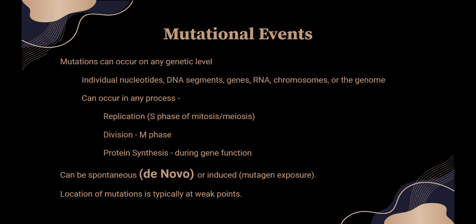These mutations can occur in any part of the copy-paste cycle of cell multiplication or in the protein synthesis phase. For example, it can happen during replication — when the nucleus gets the signal to start copying all of its DNA. If it doesn't copy all the information or copies something twice, a mutation can happen at that point. It can happen in the division phase of mitosis or meiosis where copied DNA separates into daughter cells. It can also happen during protein synthesis when something in the message process that tells the body which amino acids to place where goes wrong.